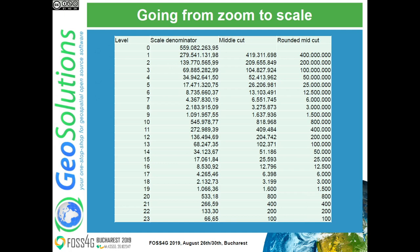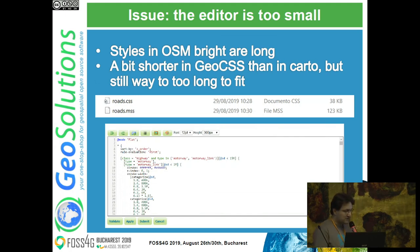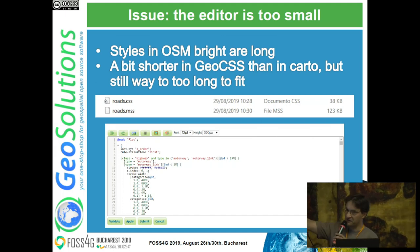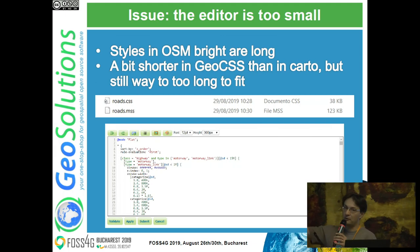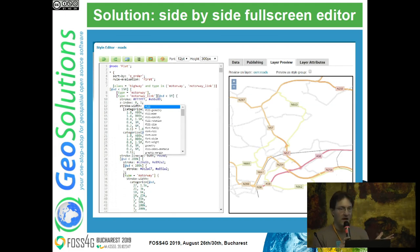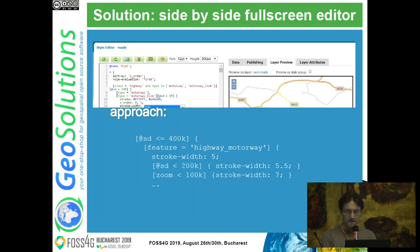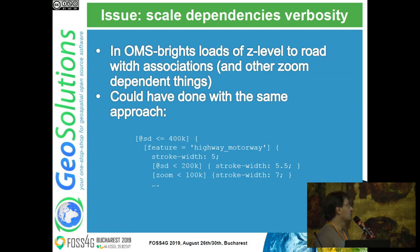Moving on - I was typing the styles, and even though GeoCSS is more compact than Carto CSS (as you can see: the road style in Carto CSS is 123 kilobytes versus 38 kilobytes in GeoCSS - significantly smaller), the GeoServer style editor was too tiny to work in. So we added a GeoServer side-by-side full-screen editor that would allow me and everybody else to work with a larger view of the stylesheet. We also added code completion into it while we were at it - one benefit for everybody.